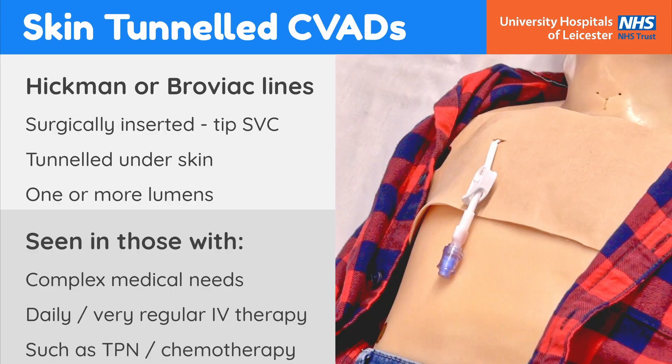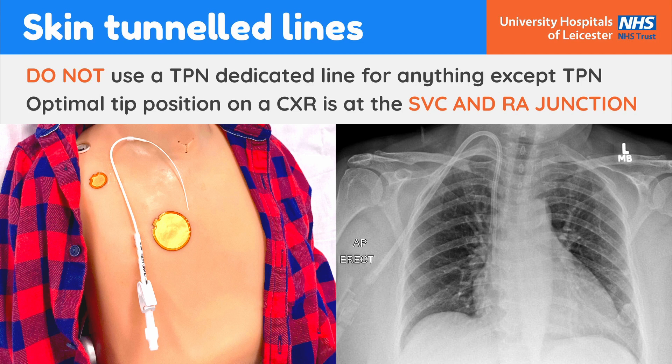Skin tunnelled lines are central venous catheters which are surgically inserted into the subclavian vein with their tip lying in the superior vena cava. They are tunnelled under and then through the skin with one or more lumens accessible externally. These are most commonly seen in children who require daily or very regular IV treatment such as those receiving TPN or chemotherapy. Do not use a TPN dedicated lumen for anything except TPN. Optimal line position on a chest x-ray is again at the SVC-RA junction.